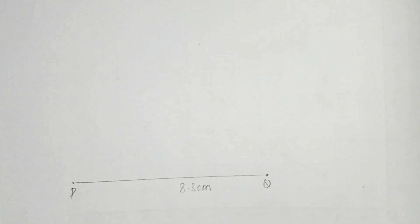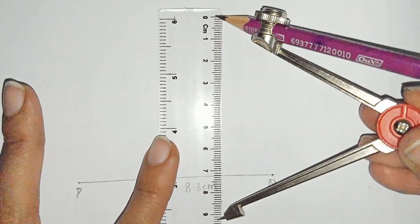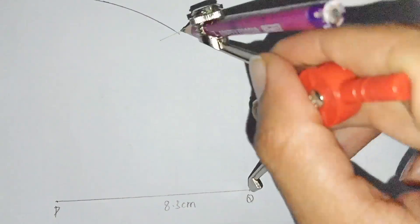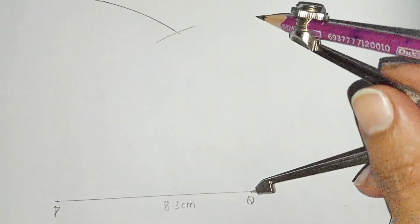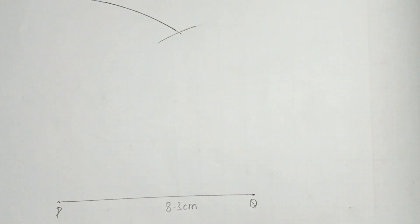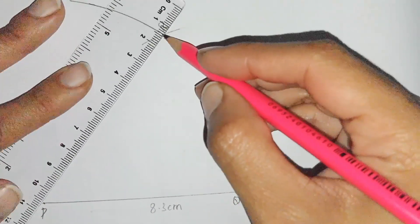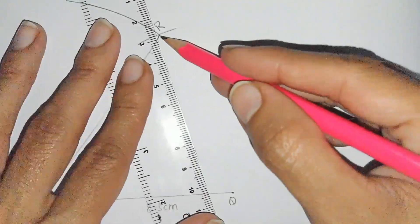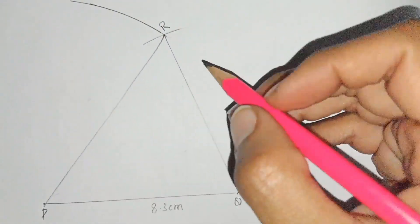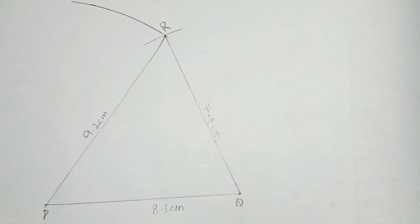Open the compass to 9.2 cm, place at point P and draw an arc. Then open the compass to 7.9 cm, place at point Q and draw an arc. Where the two arcs cut is point R. Join R with P — this is 9.2 cm — and join R with Q — this is 7.9 cm. This is our triangle PQR.